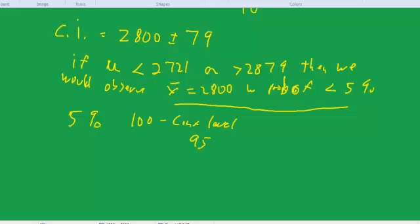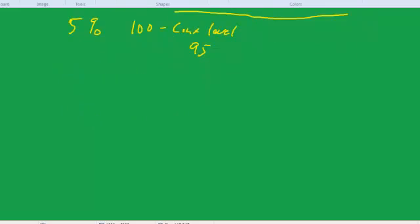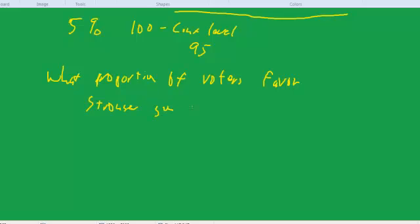And I'll do one more sample calculation. This time, I'll do a sample proportion. So, let's have some kind of poll. Let's say, what proportion of voters in a particular district favor stronger gun control? And it's a large district, but we take a sample of just 64 voters. So, n equals 64.